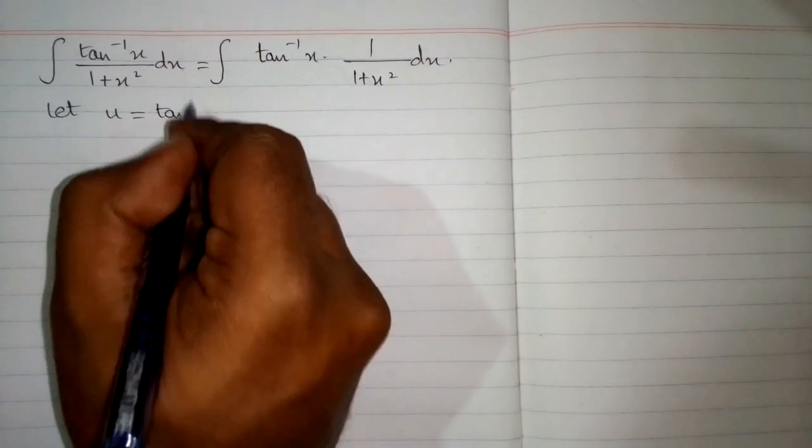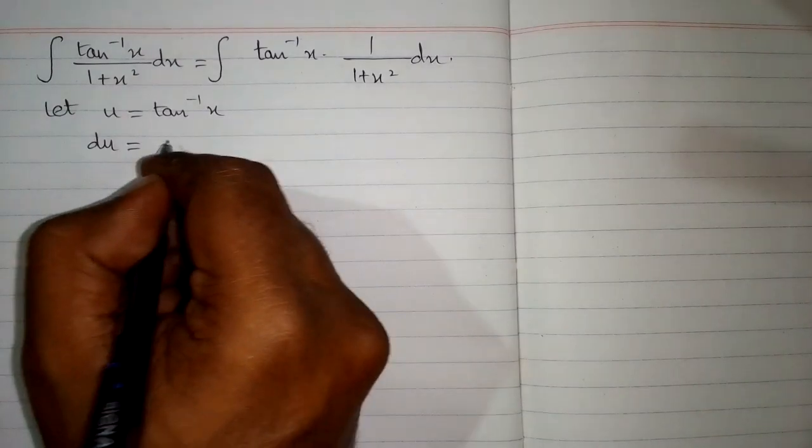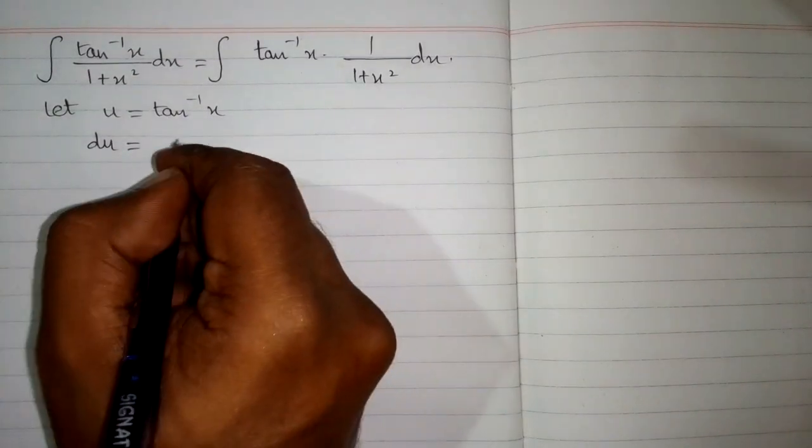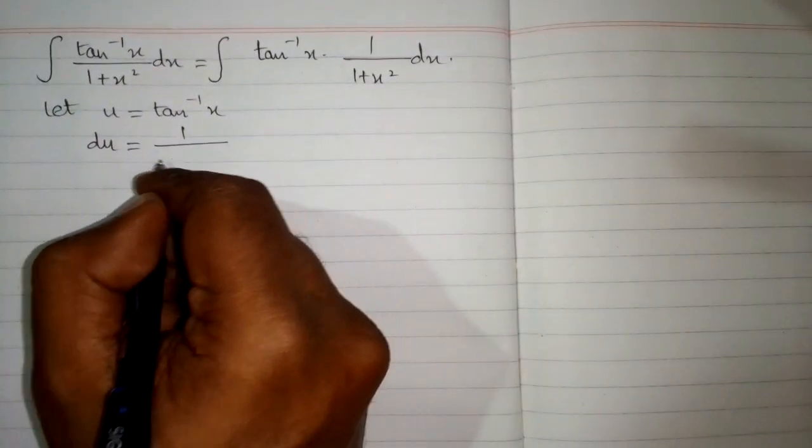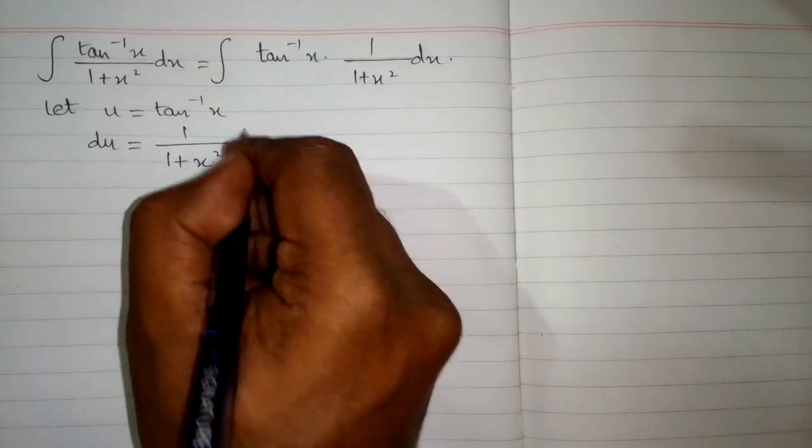We will suppose that tan⁻¹(x) equals u. Then the differential du equals the derivative of tan⁻¹(x), which is 1 over 1 plus x squared dx.